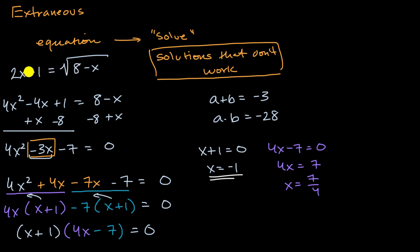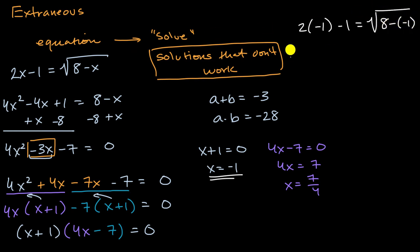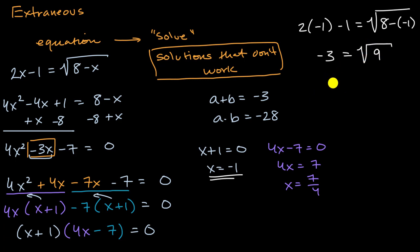Let's try x equals negative one. When solving a radical equation, you want to substitute back into the original equation to check. Substituting x equals negative one gives: two times negative one minus one equals the square root of eight minus negative one. The left-hand side is negative two minus one, which is negative three, and the right-hand side is the square root of nine, which is three. So we get negative three equals three, which is false — that's why x equals negative one is extraneous.